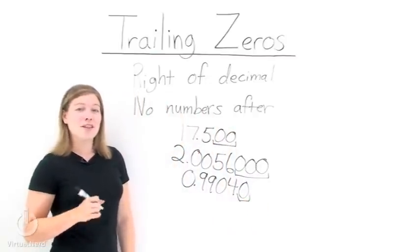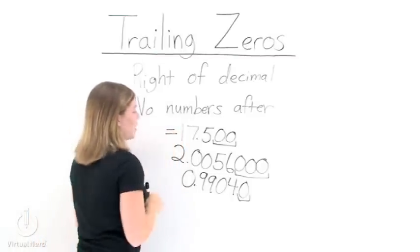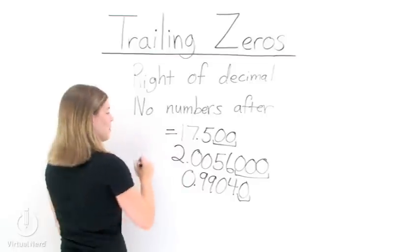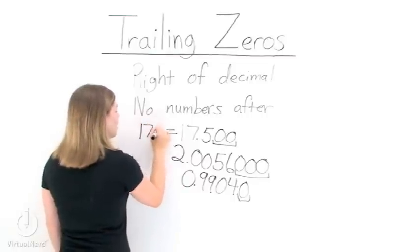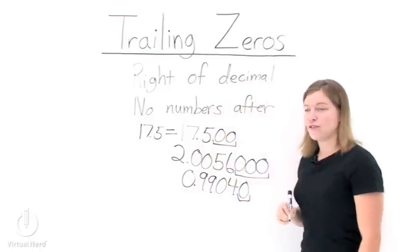Now, one other thing to remember with trailing zeros is they do not change the value of the number you're looking at. Take our first example. If we were to take off the trailing zeros, we get 17.5. That's the same thing as if we had the trailing zeros on there.